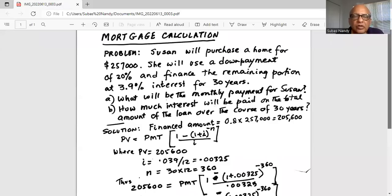Susan will purchase a home for $257,000. She will use a down payment of 20% and finance the remaining portion at 3.9% interest for 30 years.